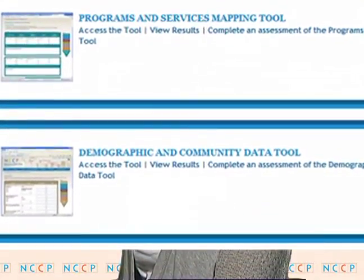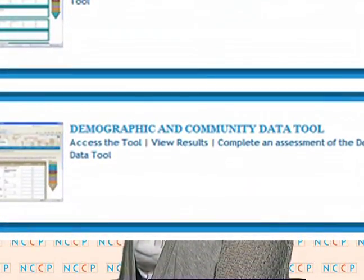The Demographic and Community Data Tool accomplishes two goals. First, it will help your coalition to identify indicator data that are collected in your community and can be used to monitor and track progress as part of your strategic planning efforts. Second, it will help your coalition assess the level of risk for adverse school and developmental outcomes among young children and families in your community.